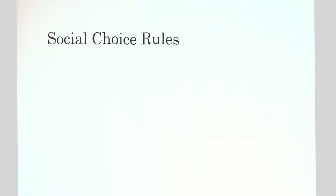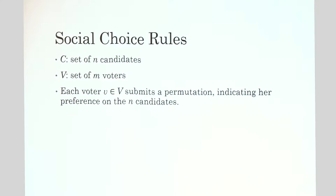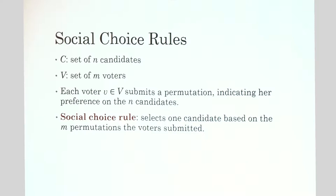Let's first introduce social choice rules. We have C, a set of M candidates, and V, a set of N voters. Each voter v submits a permutation indicating her preference on the N candidates. A social choice rule looks at all the permutations the voters submitted and selects the best candidate based on those permutations.